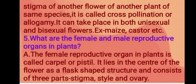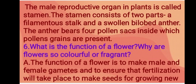Next question: what are the female and male reproductive organs in plants? The male reproductive organ in plants is called the stamen. The stamen consists of two parts: a filamentous stalk and a swollen bilobed anther. The anther bears four pollen sacs inside which pollen grains are present.